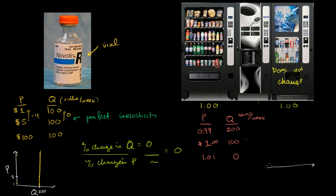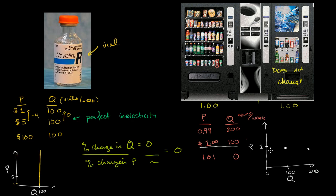So what would the demand curve look like here? Let's plot it. This is the price axis, this axis is quantity in cans per week. So at $1, the quantity demanded is 100 cans. At $0.99, the quantity demanded is 200 cans. And at $1.01, the quantity demanded is zero. So the demand curve here is going to be almost horizontal, approaching perfect elasticity. Very small changes in price end up with these huge changes in percent quantity demanded.